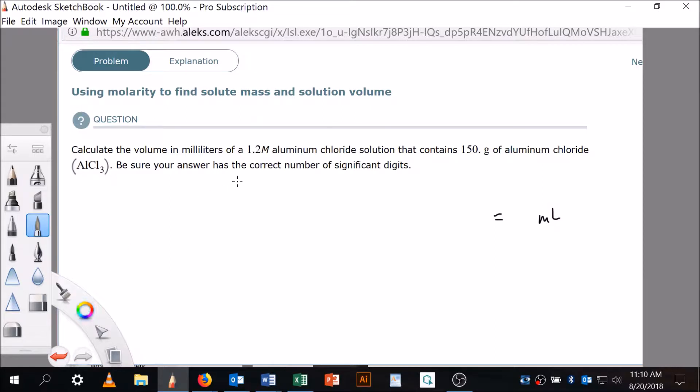Calculate the volume in milliliters of a 1.2 M aluminum chloride solution that contains 150 grams of aluminum chloride, AlCl₃. Okay, so mass then is equal to 150, looks like 3 sig figs - that's what we're being told. Grams, right.